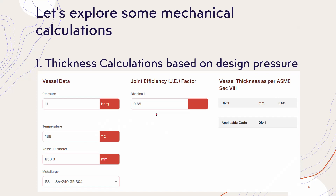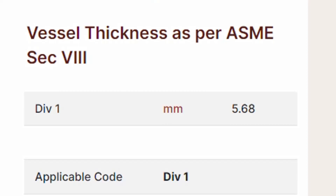Let's explore some mechanical calculations. First we'll calculate the thickness based on the design pressure. Suppose we have a vessel with a design pressure of 11 bar at a temperature of 188°C under saturation conditions. The vessel diameter is 850 mm, the material is SS 304, and the joint efficiency is 0.85. After calculating, the required thickness of the vessel is 5.68 mm.